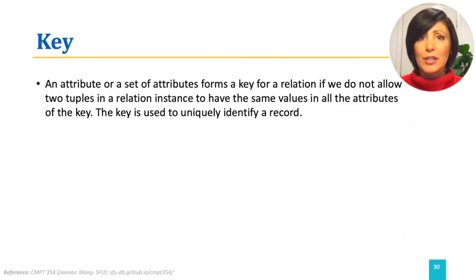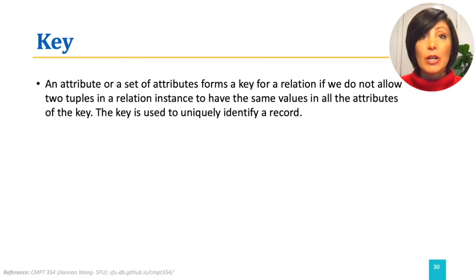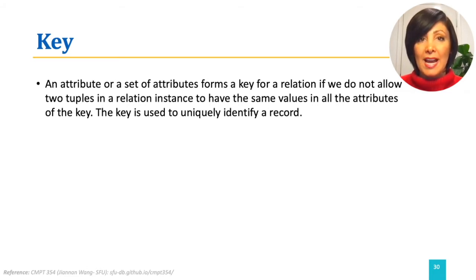We do not want to have duplicate rows in our tables — we want our rows to be unique. The identifier of unique rows, which is an attribute or a set of attributes, is called the KEY. It uniquely identifies a record. An attribute or set of attributes forms a KEY for a relation if we do not allow two tuples in a relation instance to have the same values in all the attributes of the KEY.